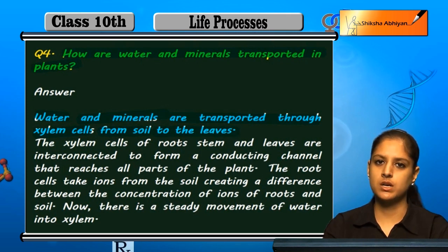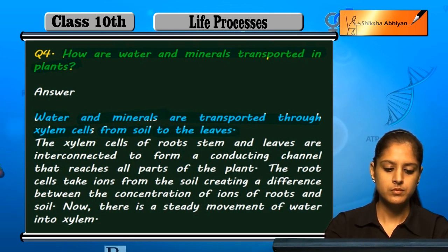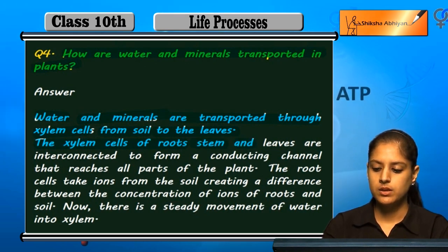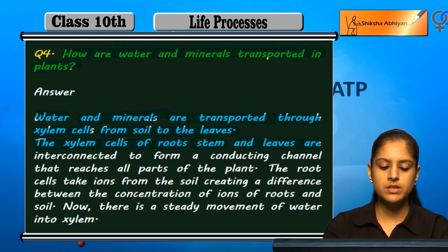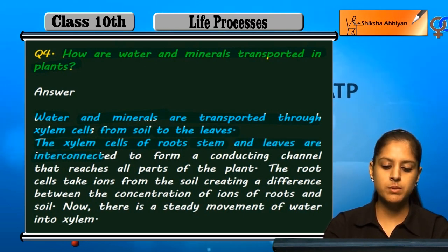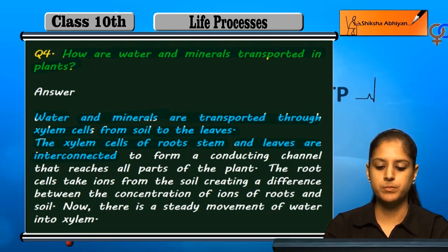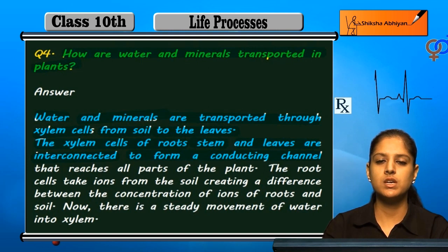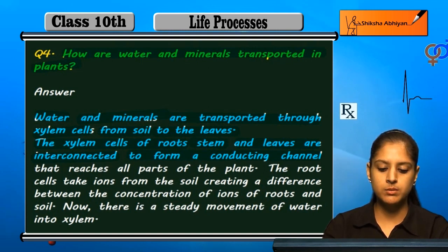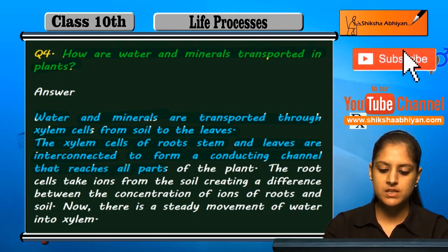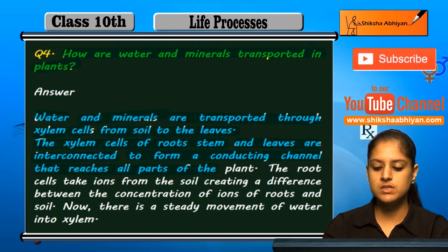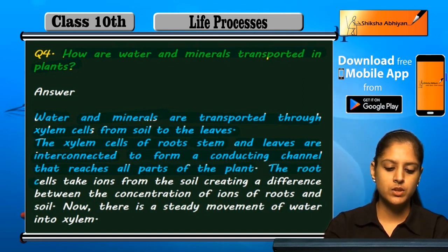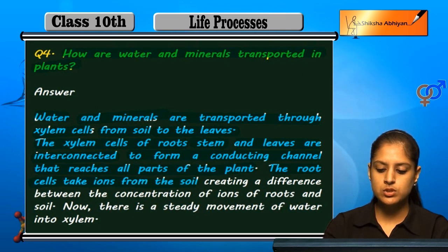The xylem cells in the roots and the xylem cells in the leaves are all interconnected with each other. They form a conducting and transporting channel, through which water and minerals are delivered to all parts of the plant.